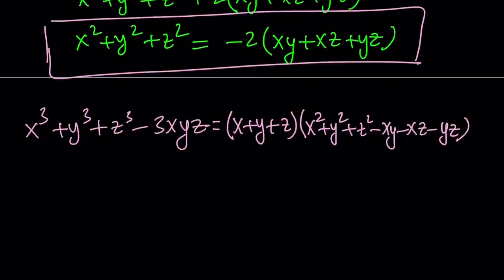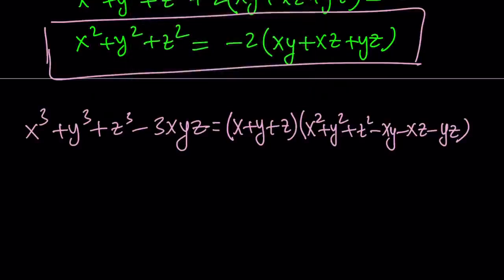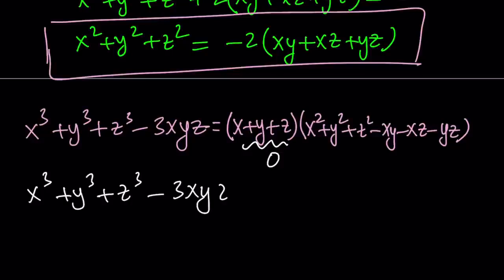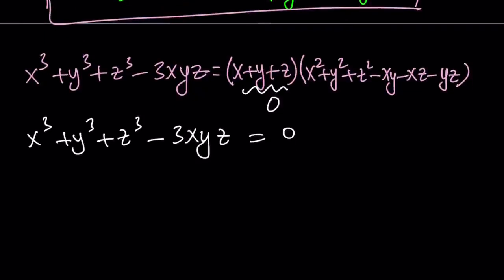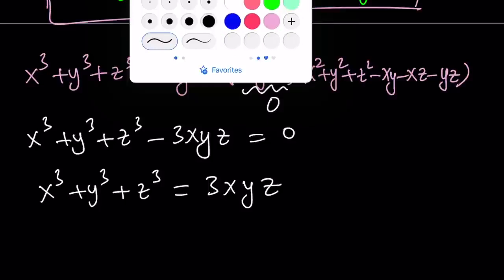This identity is good because it brings up the product xyz, and we also get x plus y plus z on the right-hand side. We know that x plus y plus z equals zero. Therefore, the whole left-hand side equals zero. That gives us an identity for the sum of cubes. This is the second identity I would like to use, so let's go ahead and save that as well.